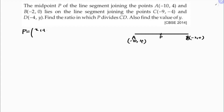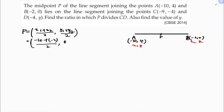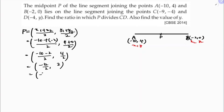The midpoint formula is (x1 + x2)/2, (y1 + y2)/2. So here x1 = -10, x2 = -2, y1 = 4, y2 = 0. That gives (-10 + (-2))/2 = -12/2 = -6, and (4 + 0)/2 = 2. So the midpoint P is (-6, 2).